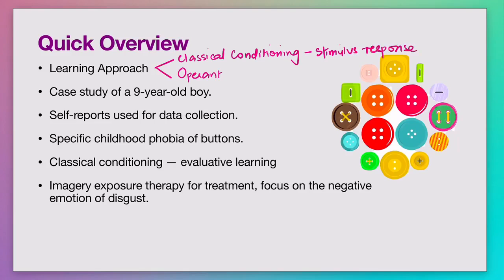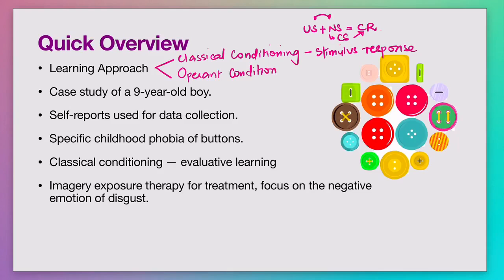The baseline assumption of classical conditioning is that any previously unconditioned stimulus, when combined with a neutral stimulus, can produce a conditioned response. For example, food is an unconditioned stimulus — when you see food, you feel hungry. When you combine that with a neutral stimulus like a bell, once the association becomes strong enough, the neutral stimulus becomes a conditioned stimulus, and just hearing the bell makes you hungry — that's the conditioned response.